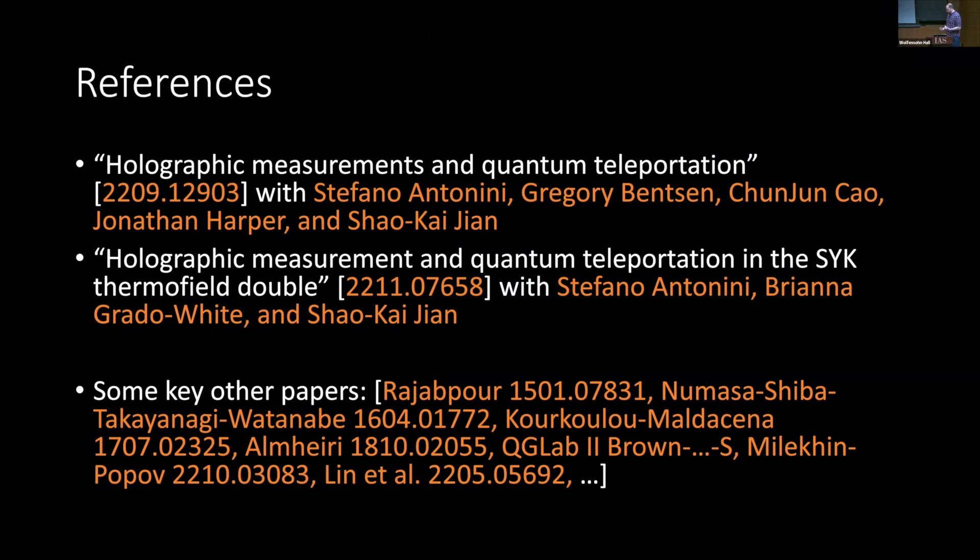The general story is about what happens if you make projections on a holographic theory. How does that change the geometry and structure of the bulk? The first paper is about projections in ADS-3 CFT-2, and the second paper is about JT gravity and SYK.